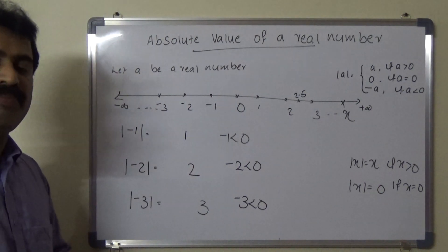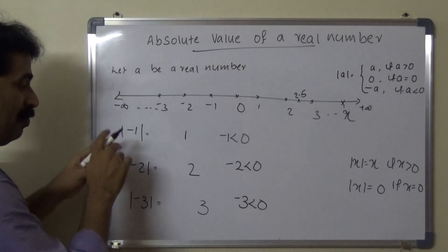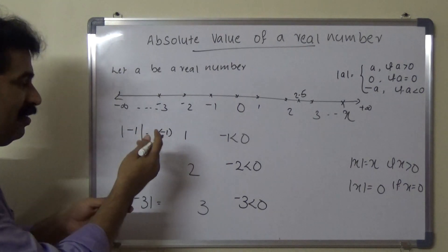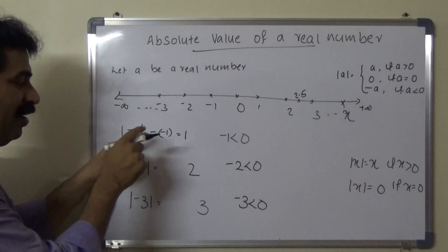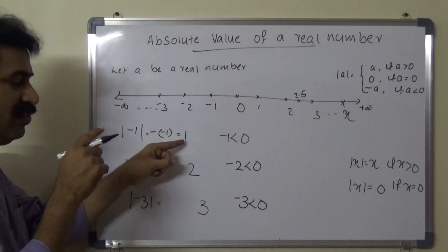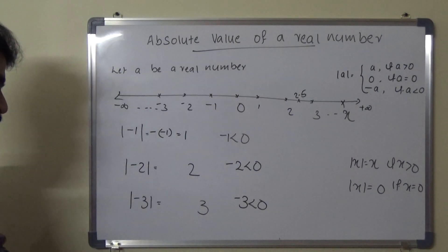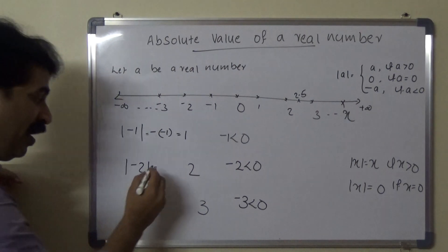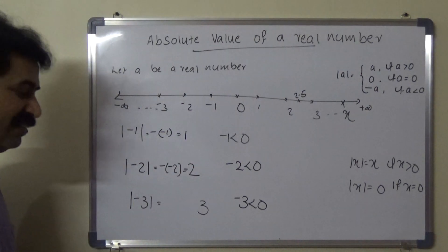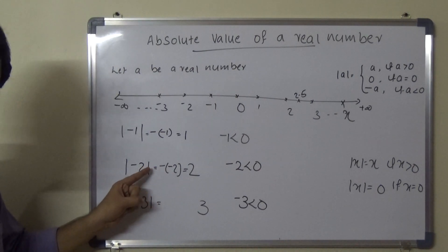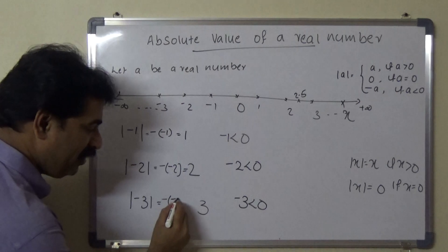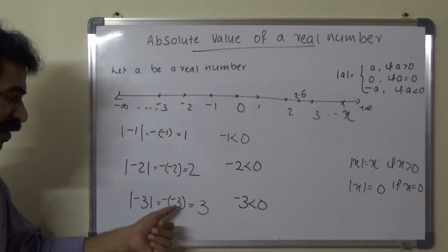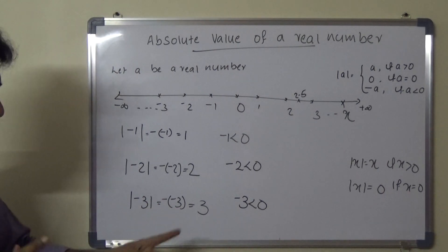How did we get 1 from the absolute value of minus 1? By multiplying minus 1 by minus 1, we get 1. Absolute value of minus 2 equals minus of minus 2, which gives 2. Absolute value of minus 3 equals minus of minus 3, which gives 3.